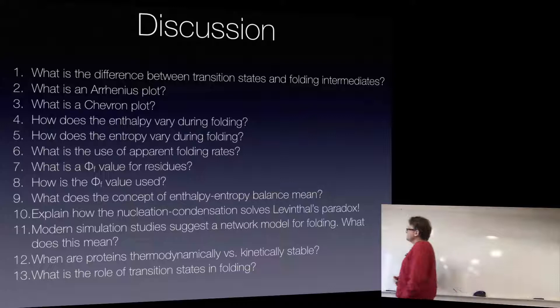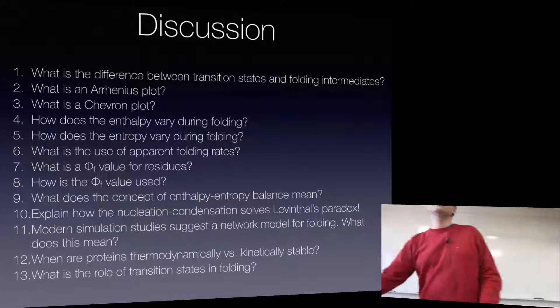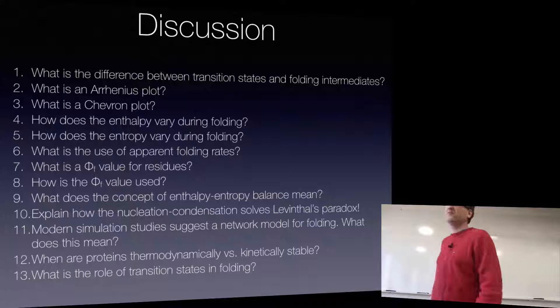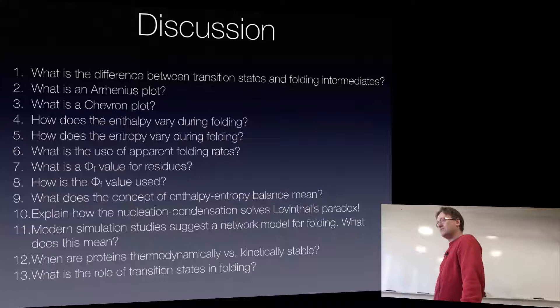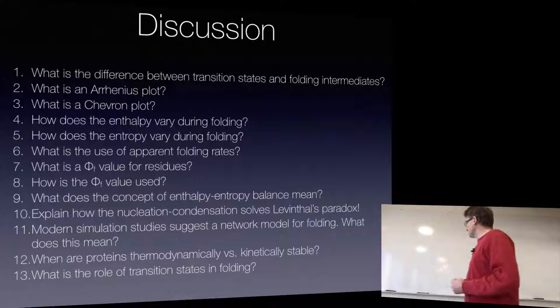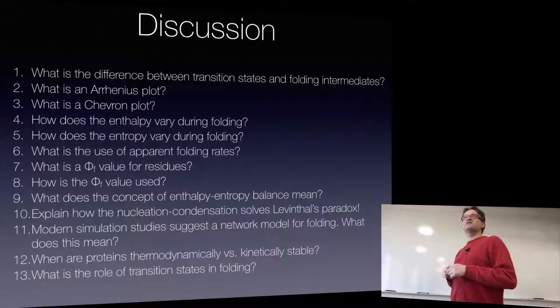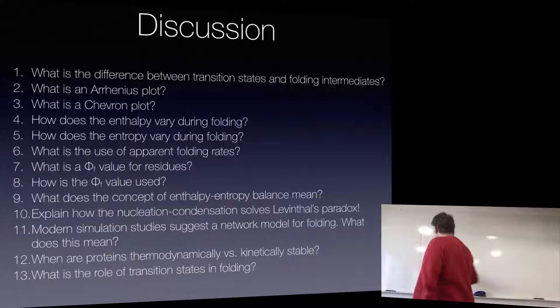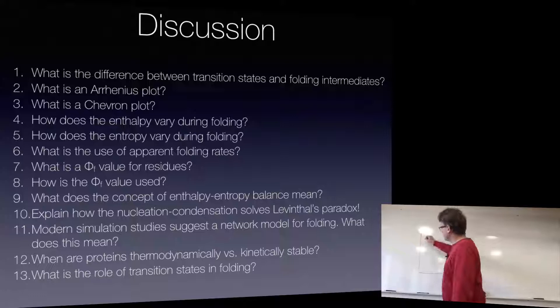So what were these Arrhenius and Chevron plots that we talked about? They are similar and yet not. The apparent rates are the sum of the rates — though I know that sounds really stupid. Think of them not as the sum of the rate but as the effective rate. In some regime with little denaturant we are going to be entirely dominated by the folding process.